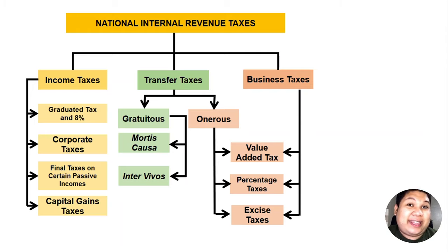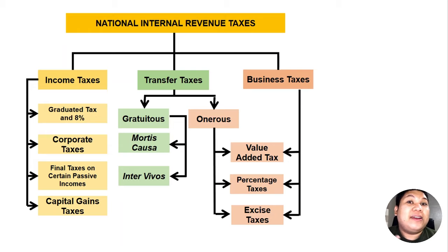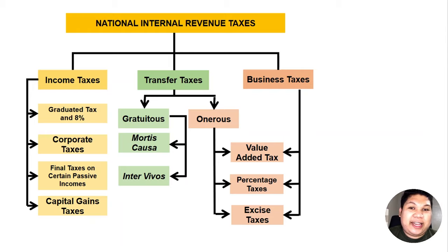For example, income tax is imposed on the right of the taxpayer to earn income — hence income tax is an excise tax. Transfer tax is the tax imposed on the taxpayer's right to transfer, whether gratuitously or onerously — hence it is also an excise tax. So excise tax has two definitions: a tax on sinful or luxurious products such as cigarettes, bags, cars, and vehicles; and a tax imposed on a taxpayer's right.